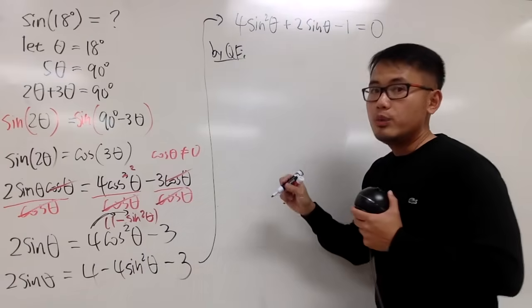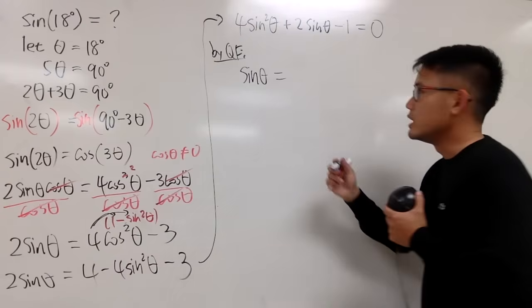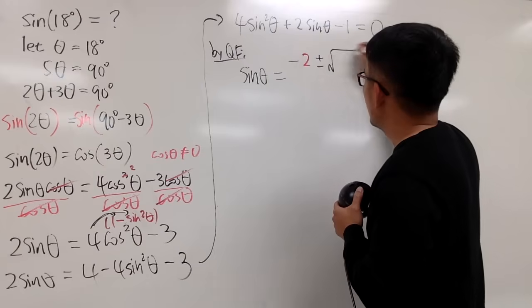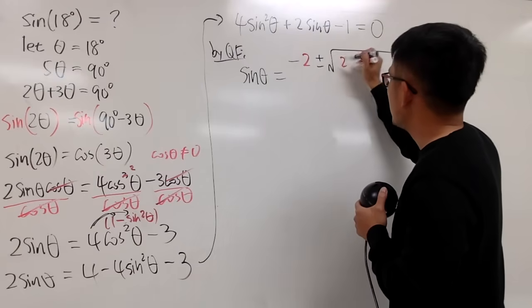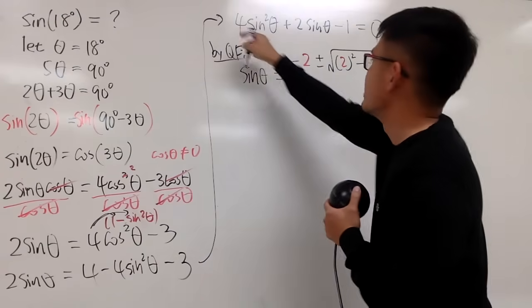We would know that sine theta, this is equal to negative b, which is negative 2, plus minus square root of b squared, which is 2 squared, like this.